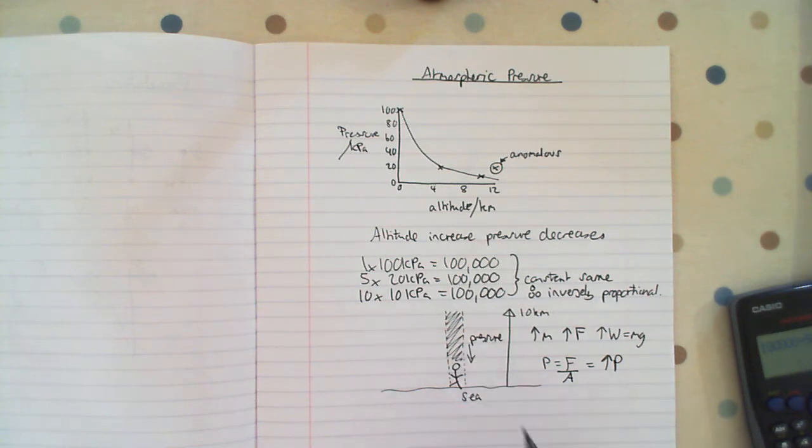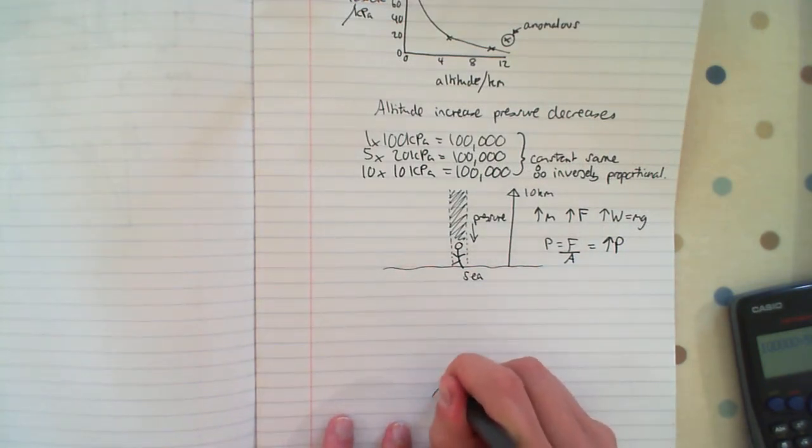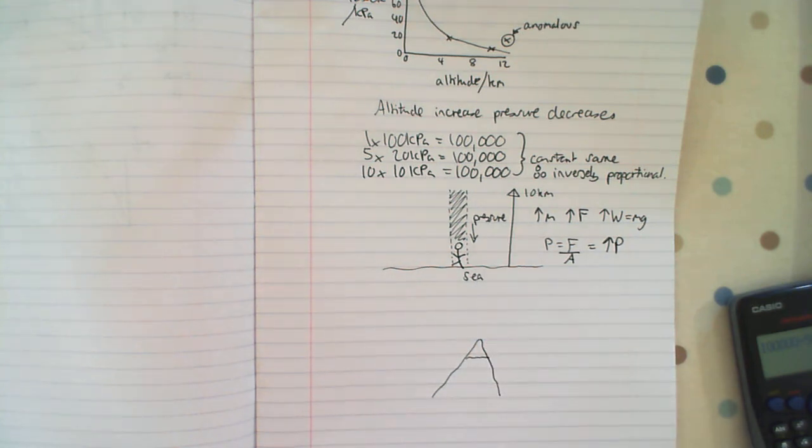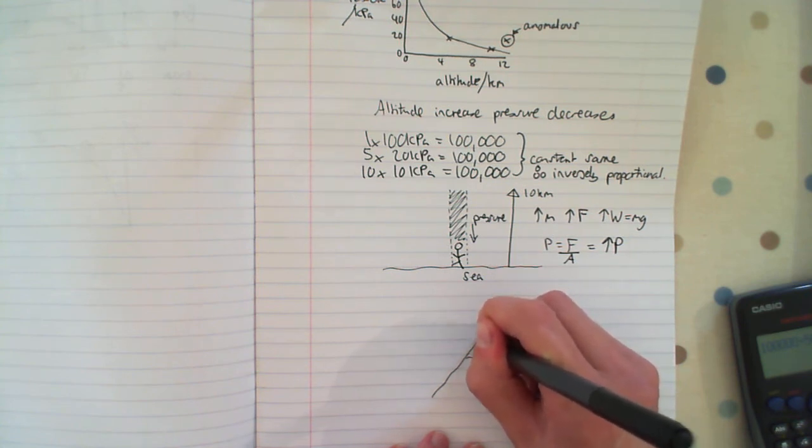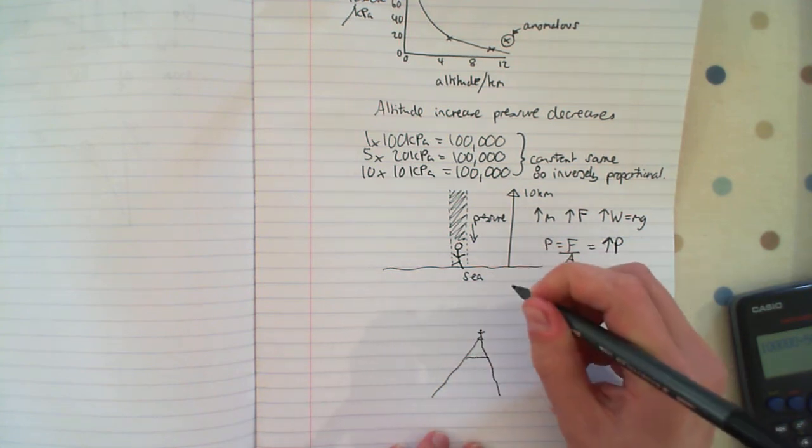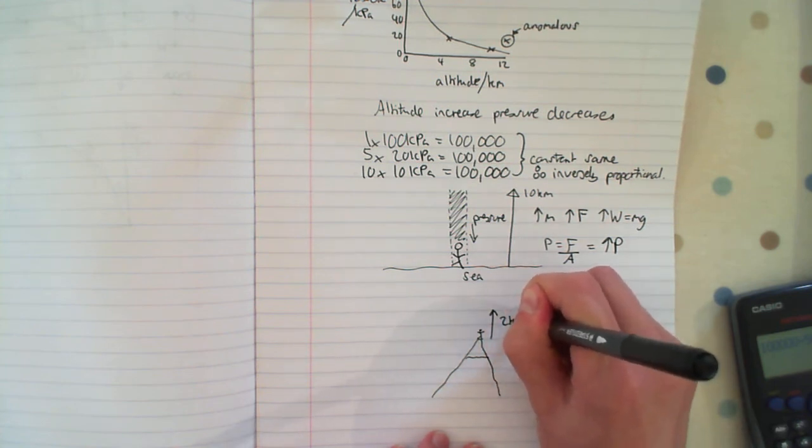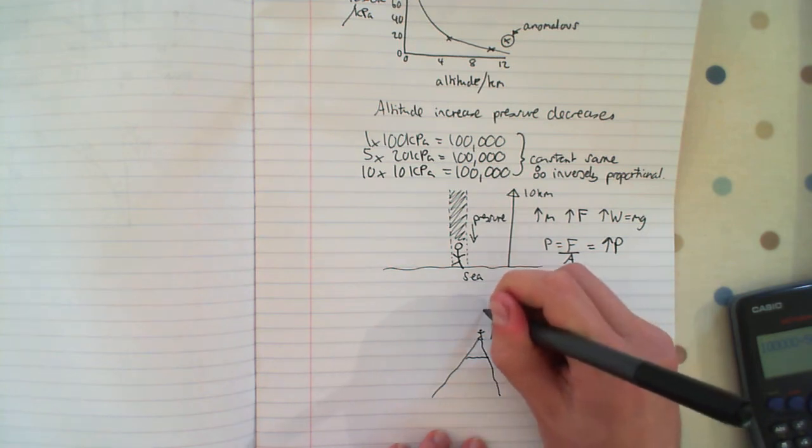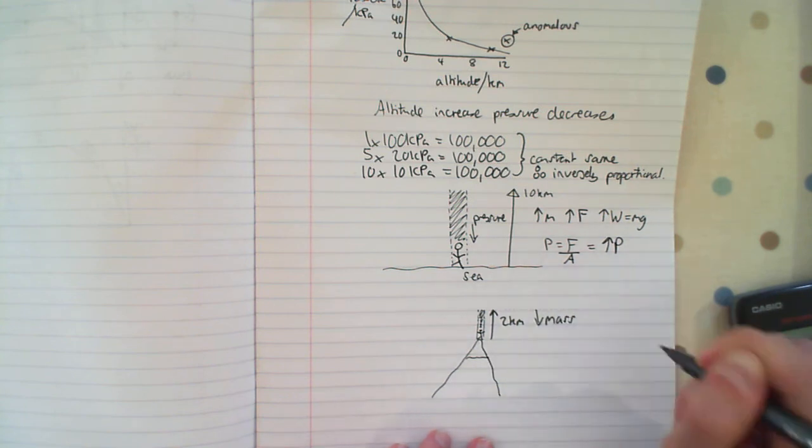However, if we were to put that person floating in the air or up a mountain, let's exaggerate this to prove the point. We've got Everest, let's say Everest is 8 kilometers tall, someone stood at the top of Everest. This time the altitude they've only got 2 kilometers, they've only got 2 kilometers of air above them. So we've got less mass, we've got less mass of air above them.